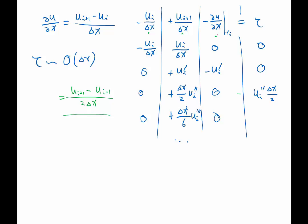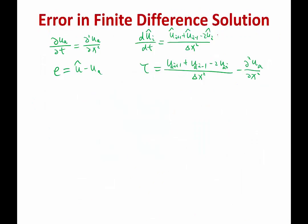The discrete solution u_i only exists at discrete points — it doesn't even have a well-defined, uniquely defined derivative. So when we compute truncation error, we apply the discrete operator on the analytical solution.